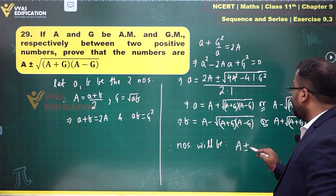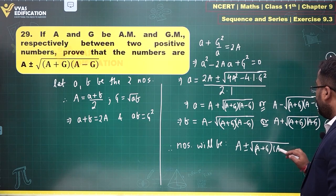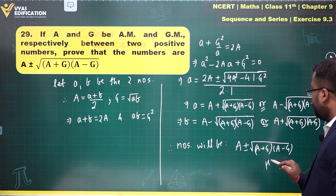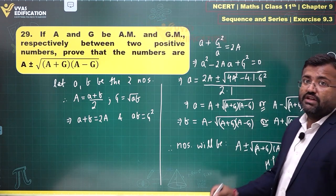A ± √((A+G)(A-G)). Hence proved. That's the complete solution for this 29th question as you can see over here.